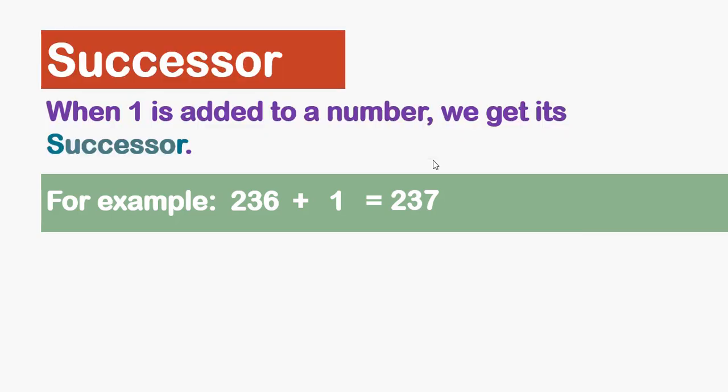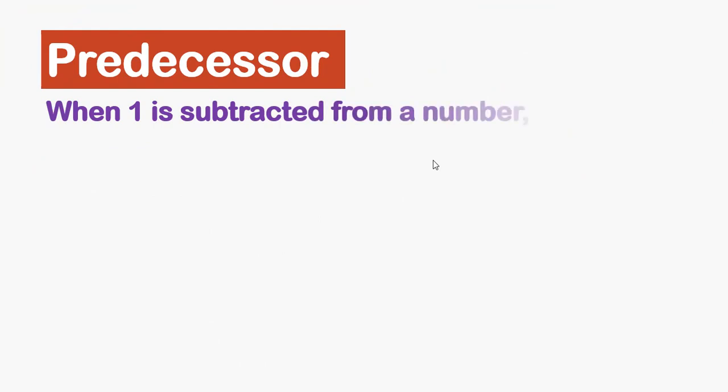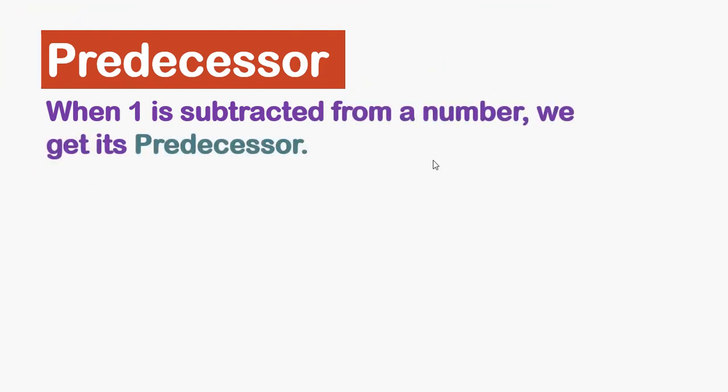The definition of predecessor is: when one is subtracted from a number, we get its predecessor.